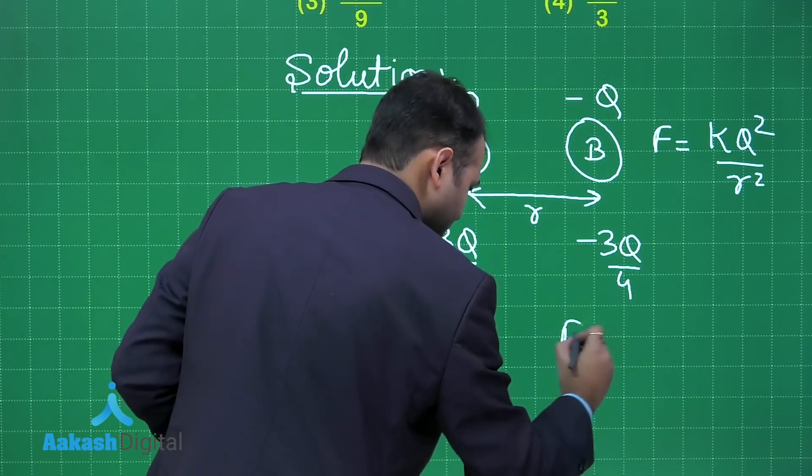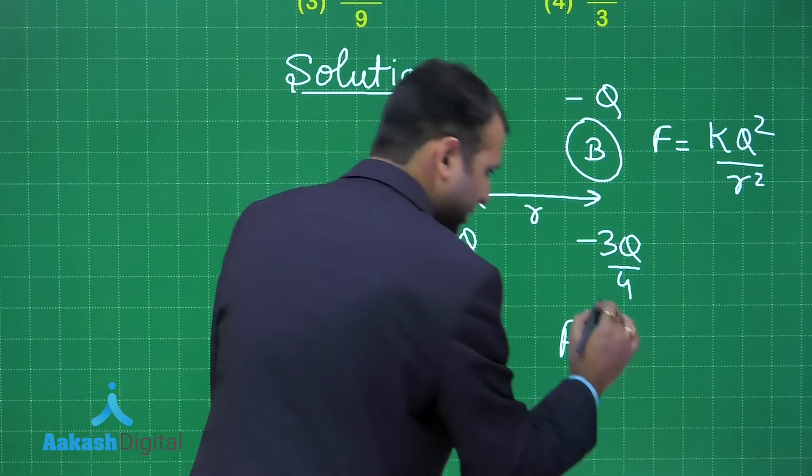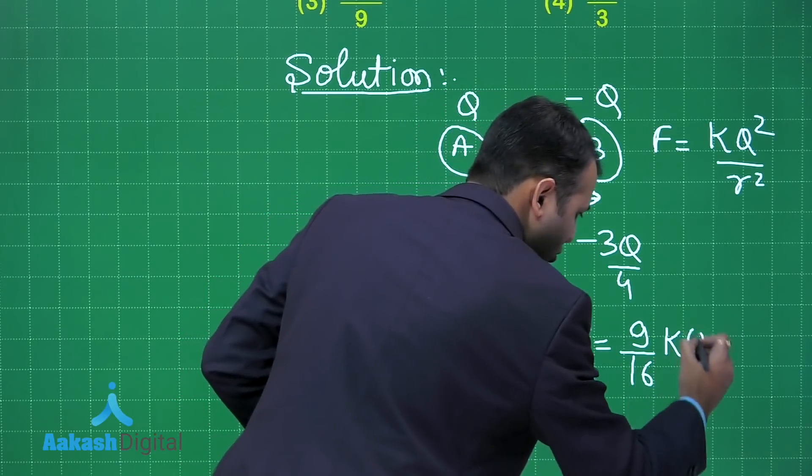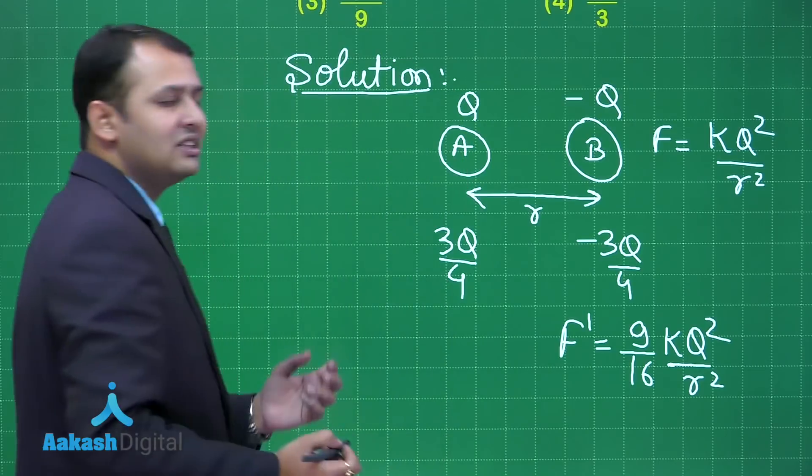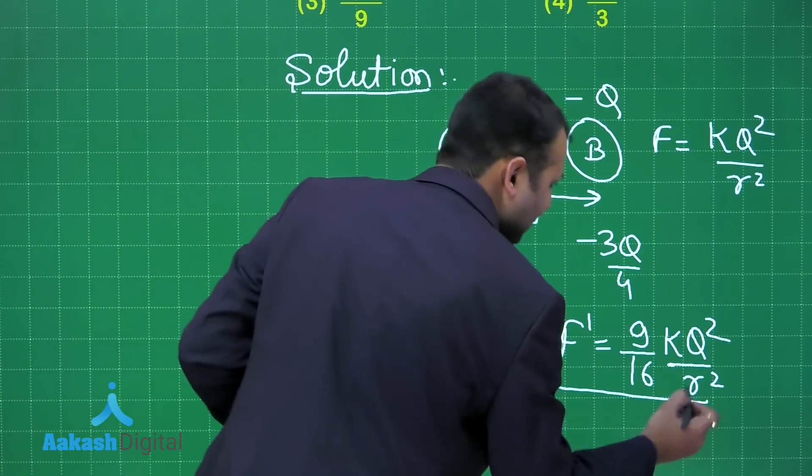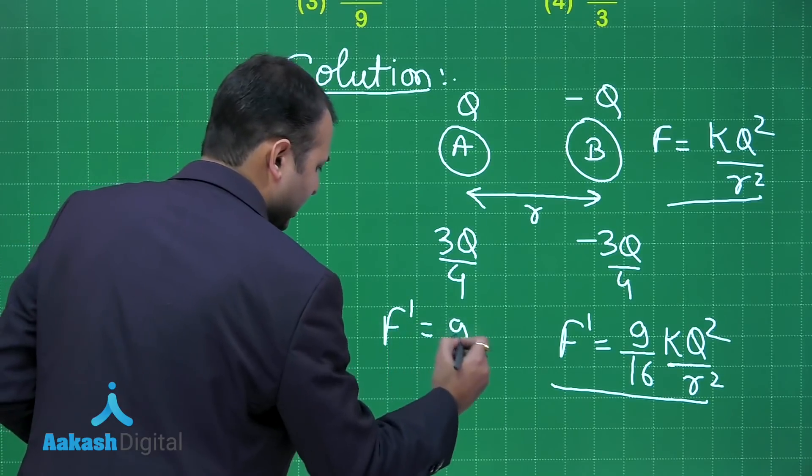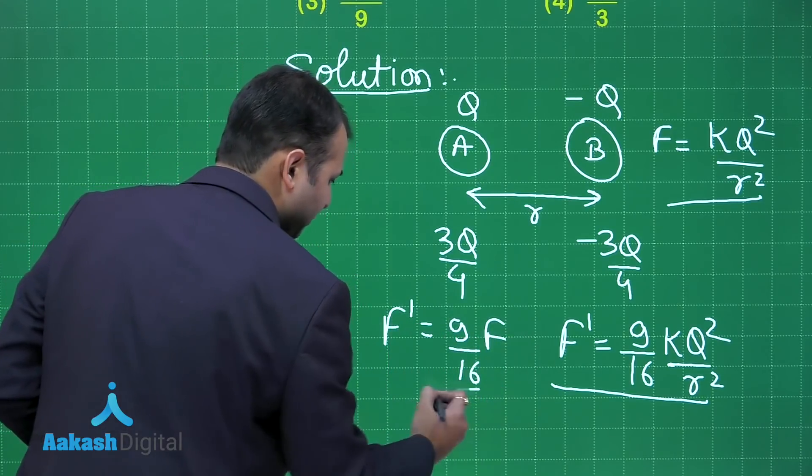Now the new force F dash would be by magnitude 9 by 16 K Q square upon r square as we have not changed the distance also. So if you compare this F dash and F you will find that F dash is 9 by 16 times of F.